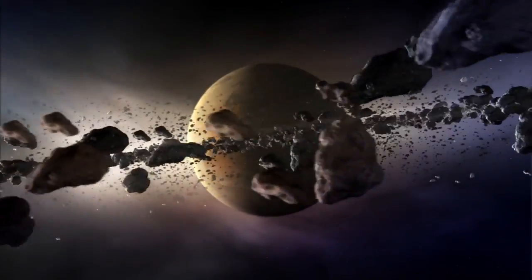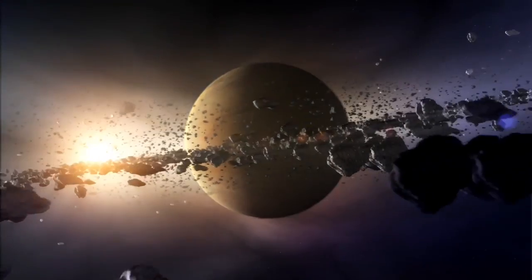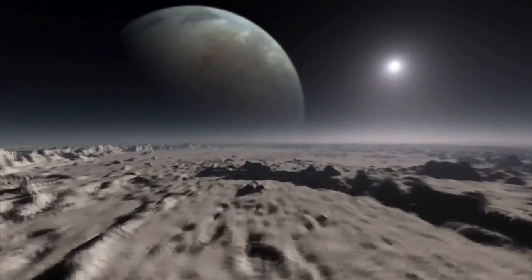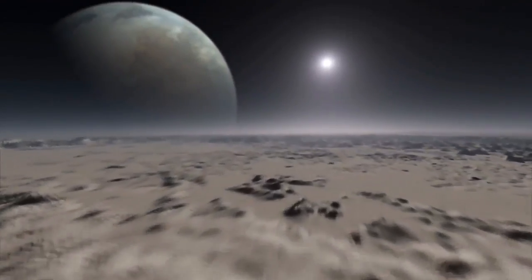It could have an enormous ring system, much larger than Saturn's, reflecting starlight in all directions. One day the material in these rings may even coalesce to form moons.